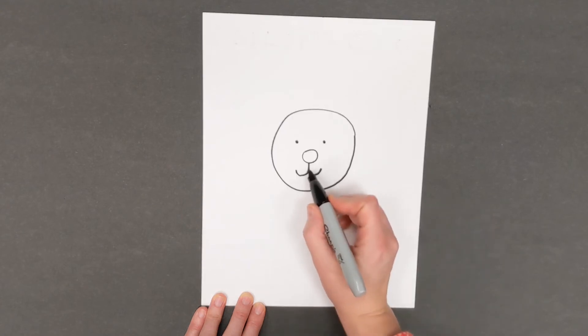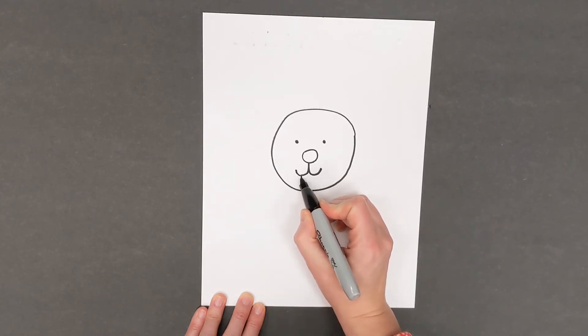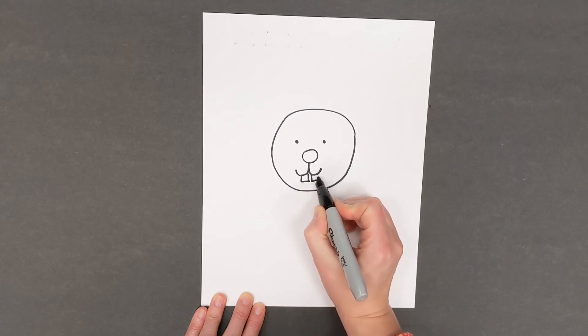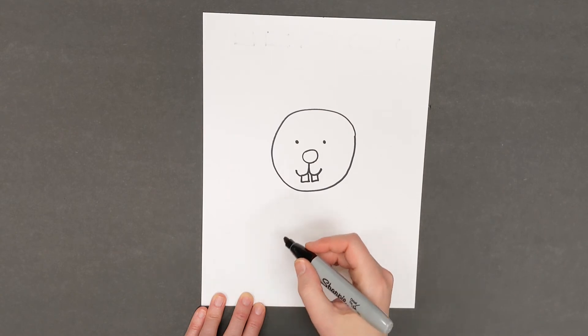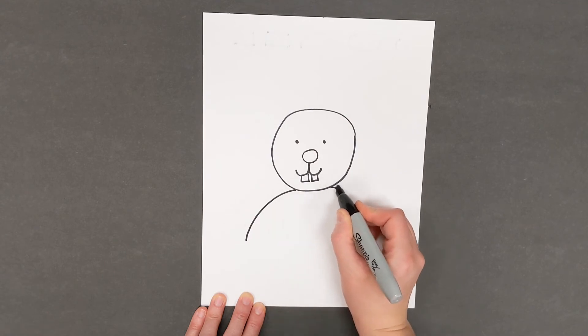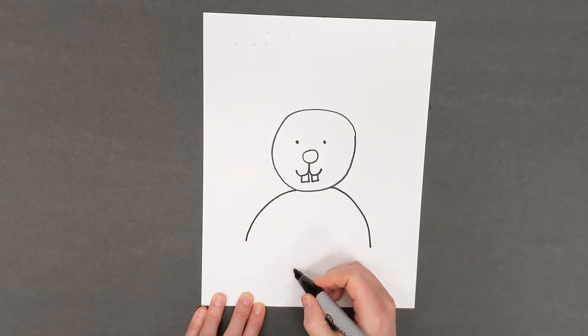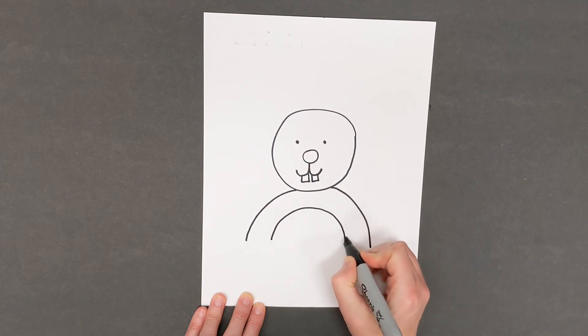Below the half curves there I want you to draw two small rectangles or half rectangles. Below the big circle I want you to draw a half oval or an arch. Then below that I want you to draw a smaller half oval or arch.